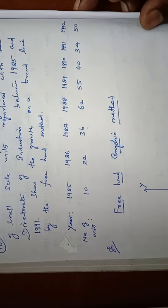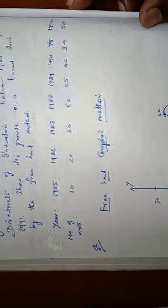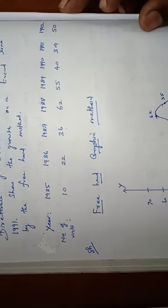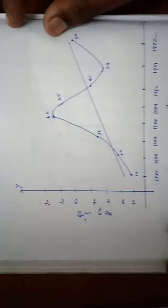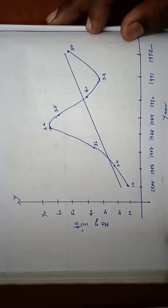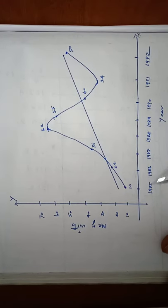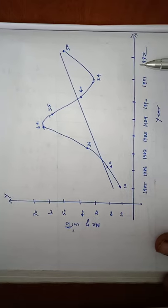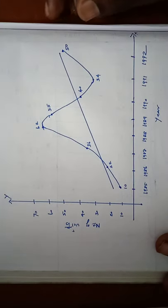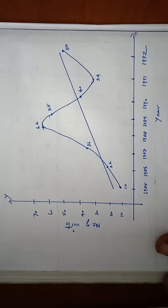This problem can be applying only in the freehand graphic method. So in the graph sheet, the row entries are taken in year, the column entries are taken in number of units.